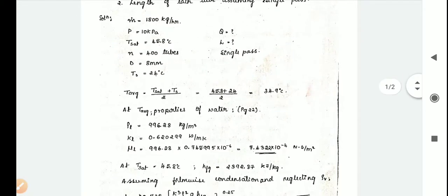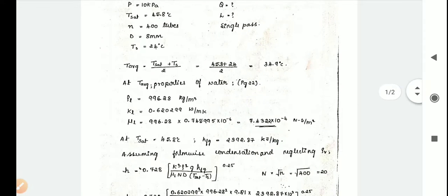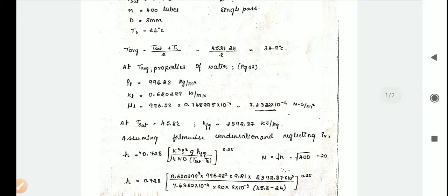First step is to find the average temperature: T sat plus T s divided by 2, which is 45.8 plus 24 divided by 2, equals 34.9 degrees Celsius. At 34.9 degrees Celsius, write down all rho l, k l, mu l values. At T sat 45.8 degrees Celsius, note the h fg value.